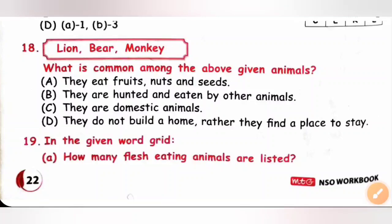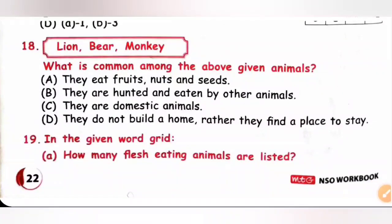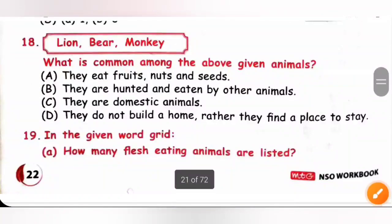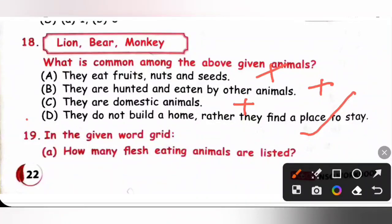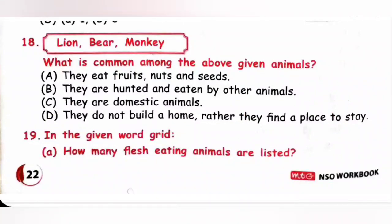Question 18: Lion, bear, monkey — what is common among these animals? Option A: they eat fruits, nuts, and seeds — no, lion eats flesh. Option B: they are hunted by other animals — no. Option C: they are domestic animals — no. Option D: they do not build a home; rather, they find a place to stay. Lion and bear live in natural caves, and monkey lives on trees. Option D is the correct answer.